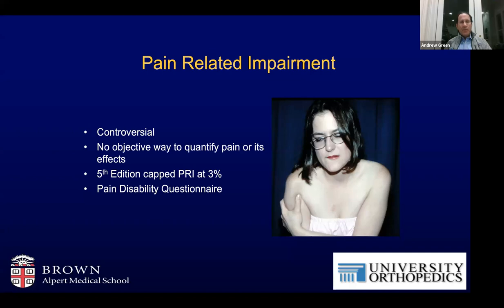Pain-related impairment was introduced in the fifth edition and is quite controversial, as there's no objective way to quantify pain or its effects on individuals. The fifth edition indicated you could apply pain-related impairment but capped it at 3%, so it's a very small contribution. There's a recommendation in the guides to use a pain disability questionnaire to assess the patient's pain and how it might relate to impairment.